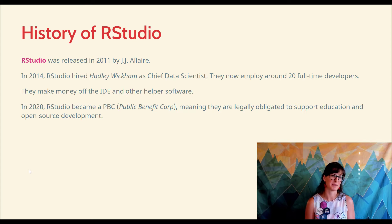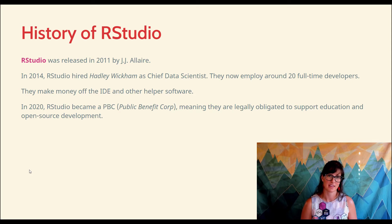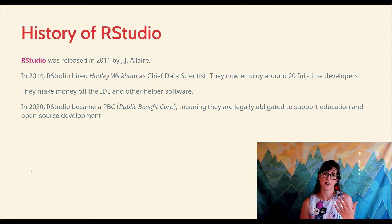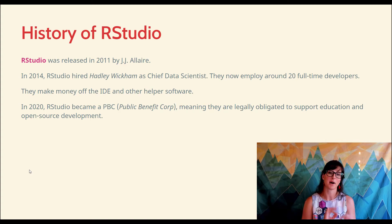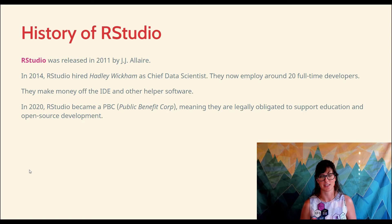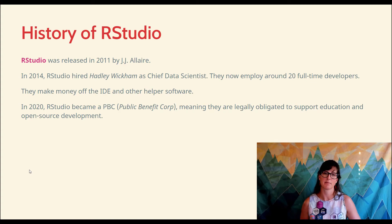A really cool thing happened this year. In January, RStudio became what's called a public benefit corporation. This is really exciting because a lot of people are appreciative of the way RStudio has given back to the open source community and the outreach they do for education. Now that they're a public benefit corporation, they are legally obligated to continue doing those things — basically signed up to be held accountable to continue supporting education and paying people to develop open source free software.